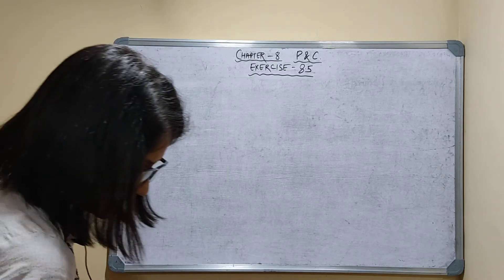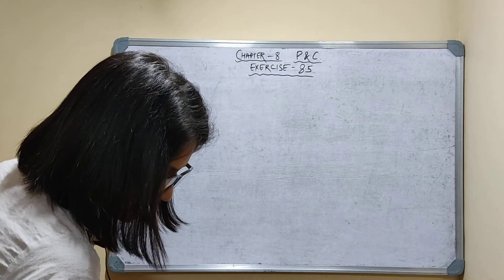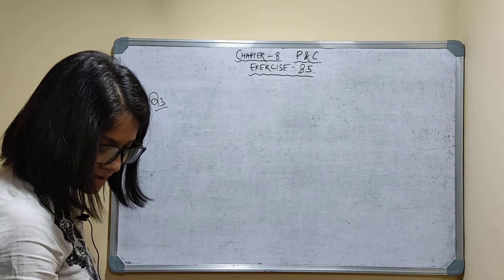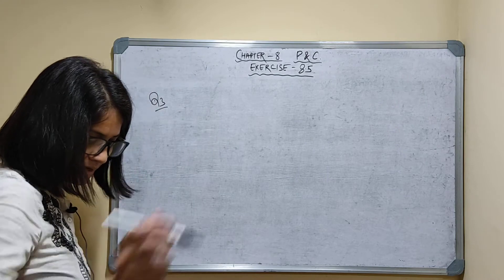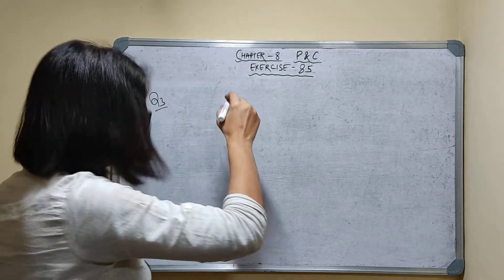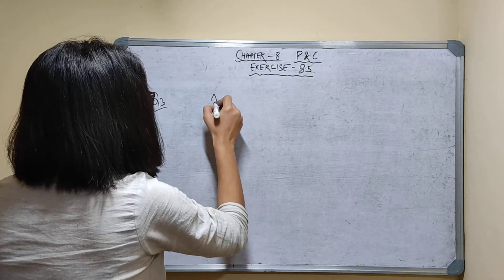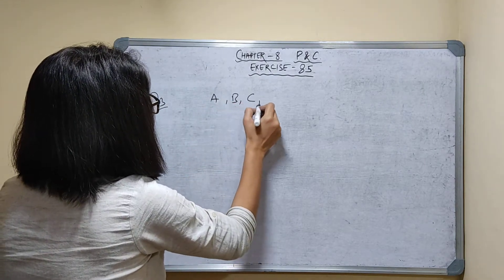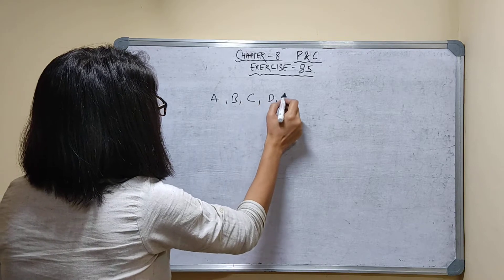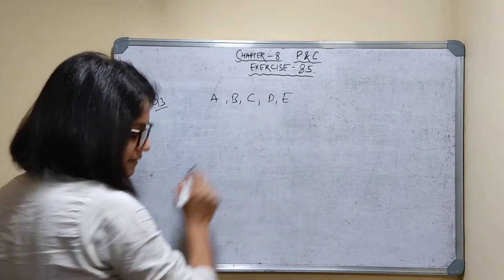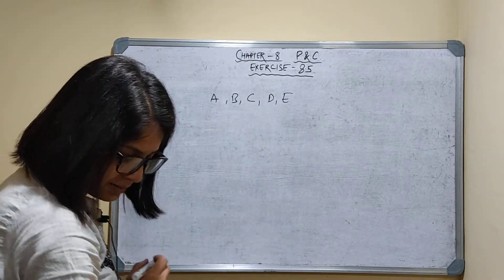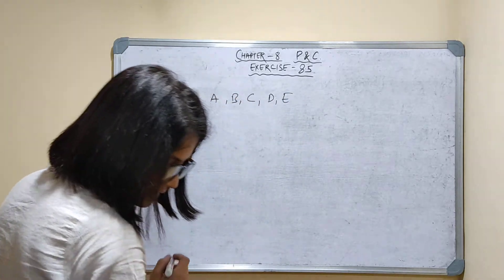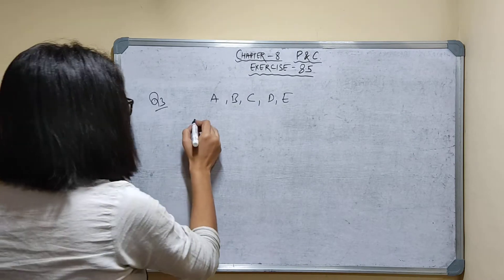Question number 3. In how many ways can 5 persons A, B, C, D and E sit around a table if B and D sit next to each other?